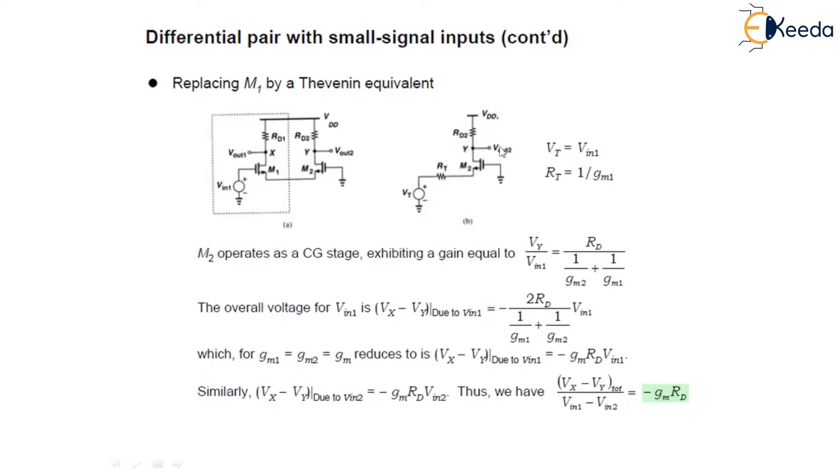So M2 operates as a common gate stage, exhibiting a gain of Vy upon Vin1. Again applying Thevenin rule across this particular circuit, Vy upon Vin1 is given as Rd upon 1 upon Gm2 plus 1 upon Gm1.